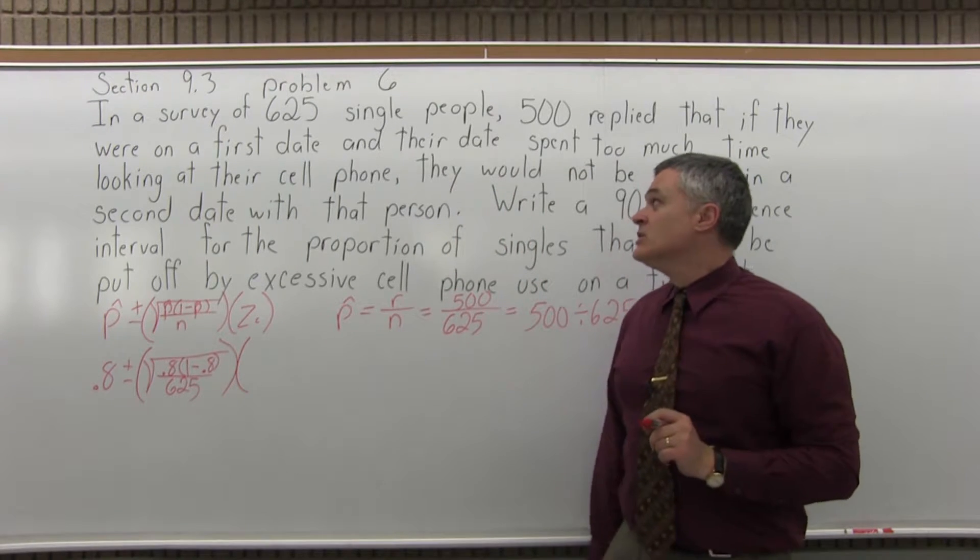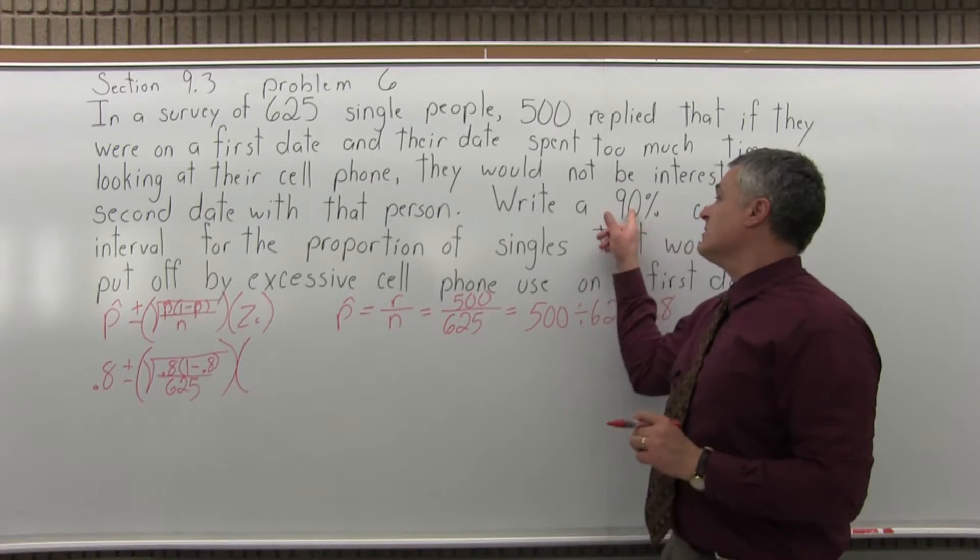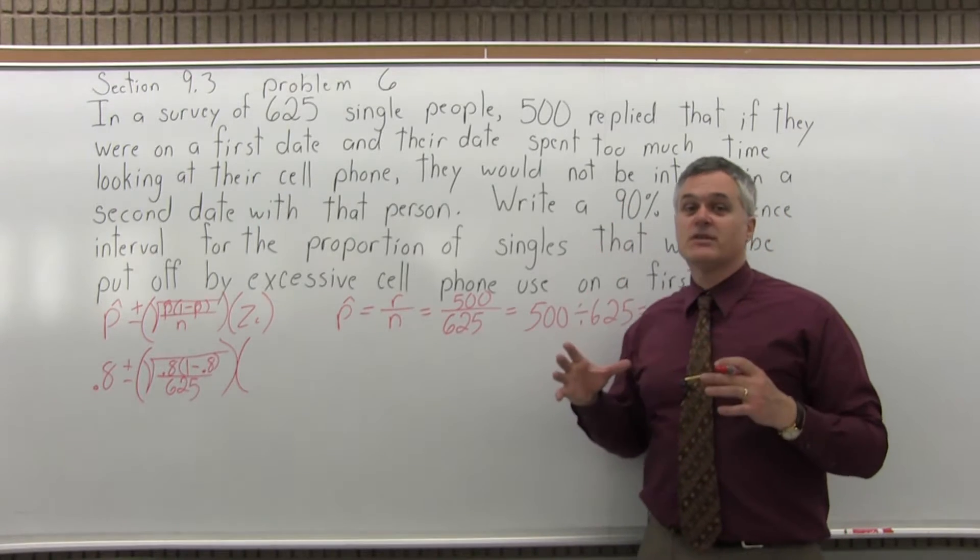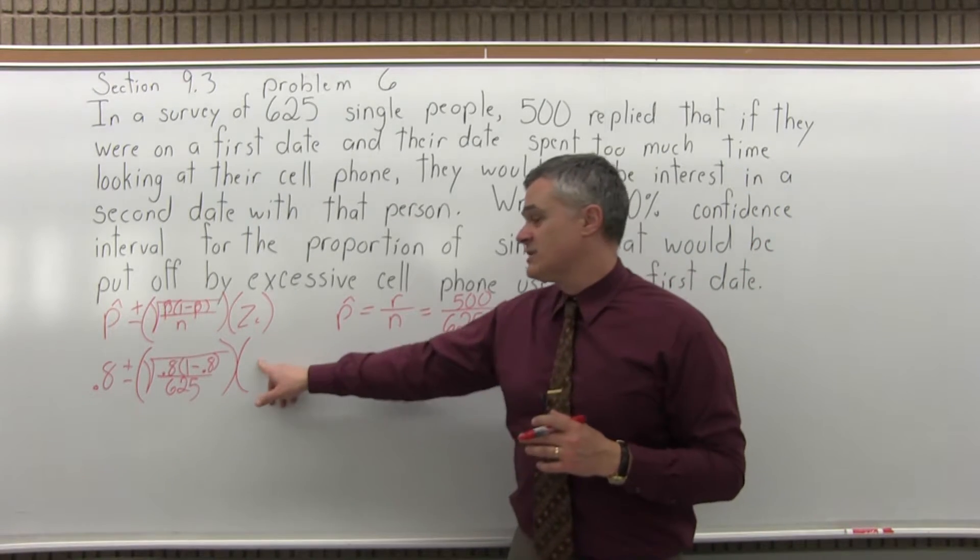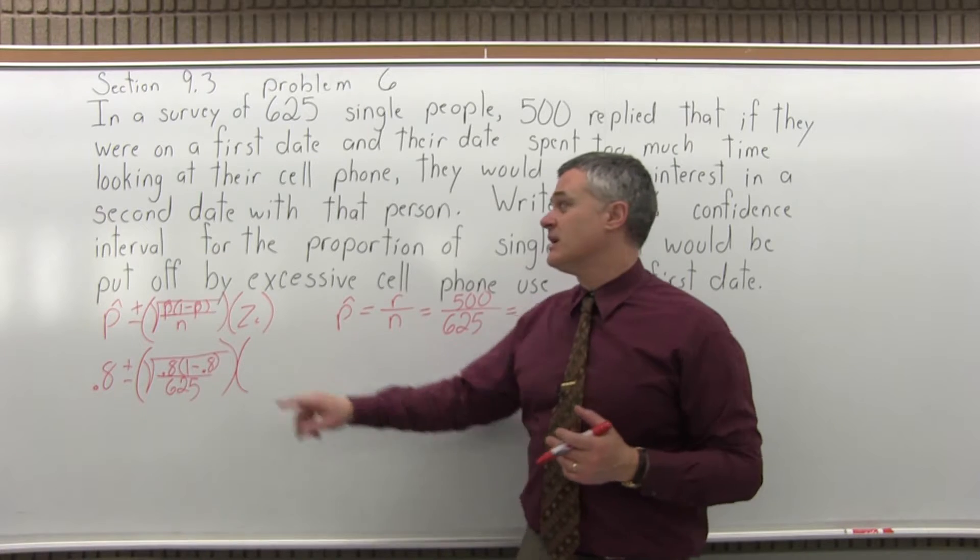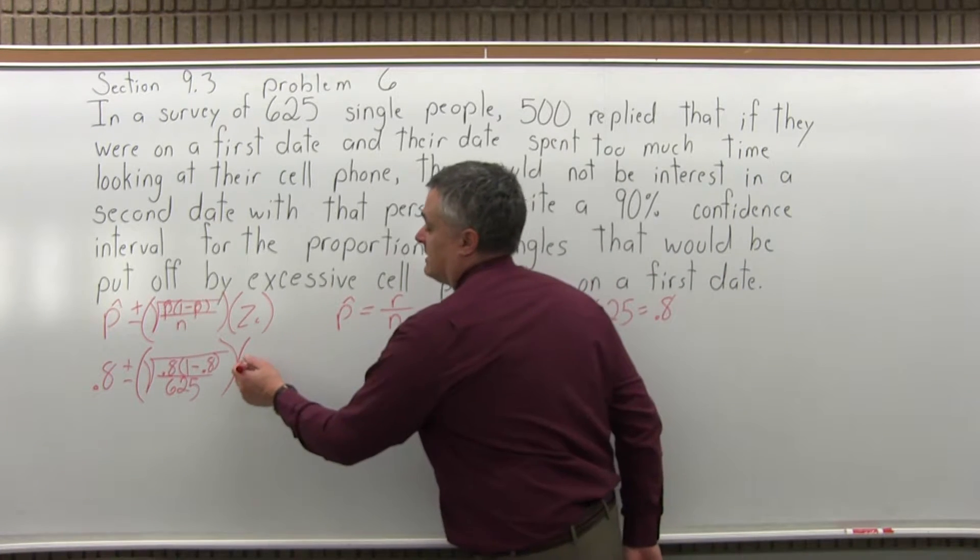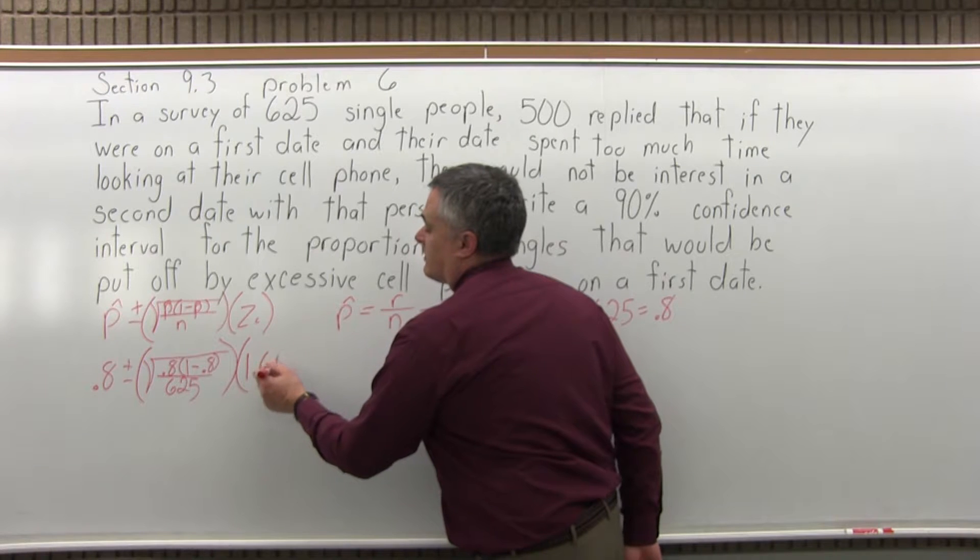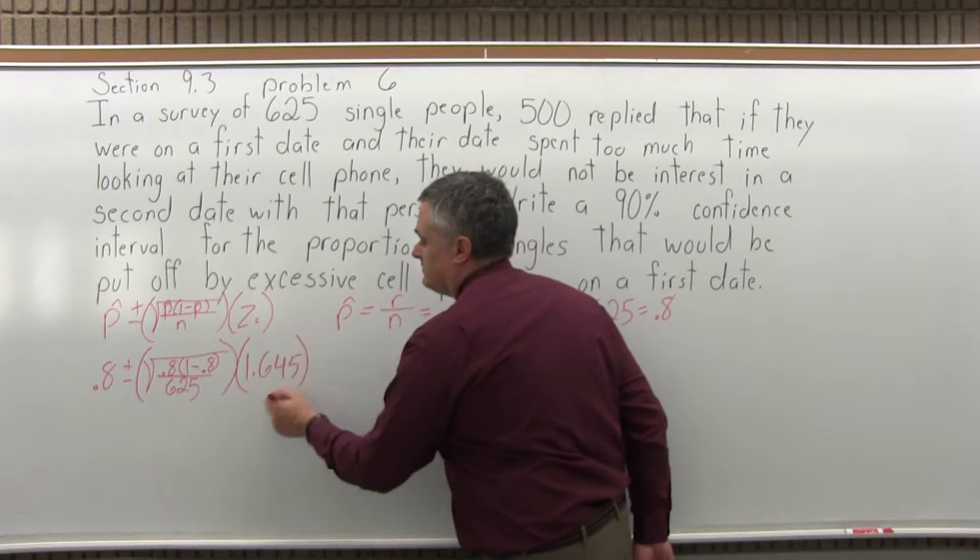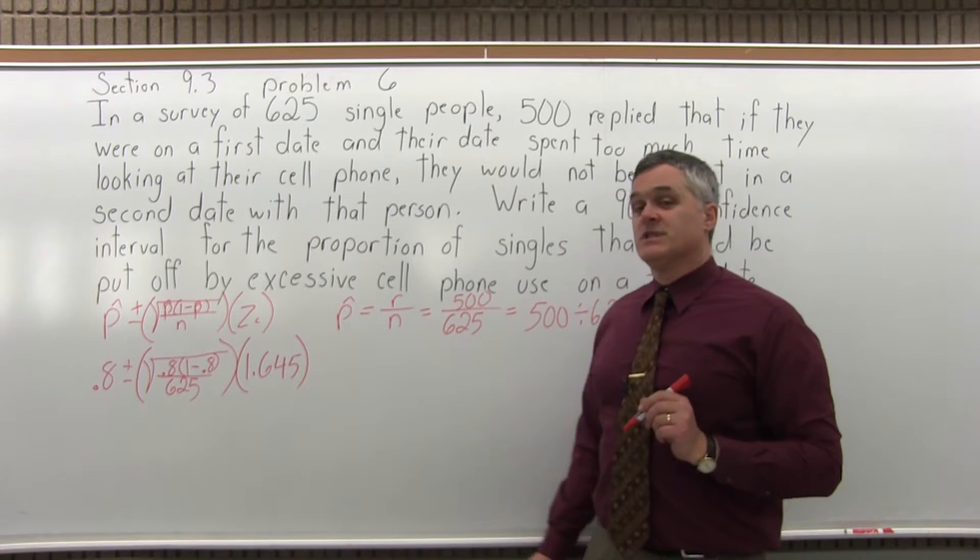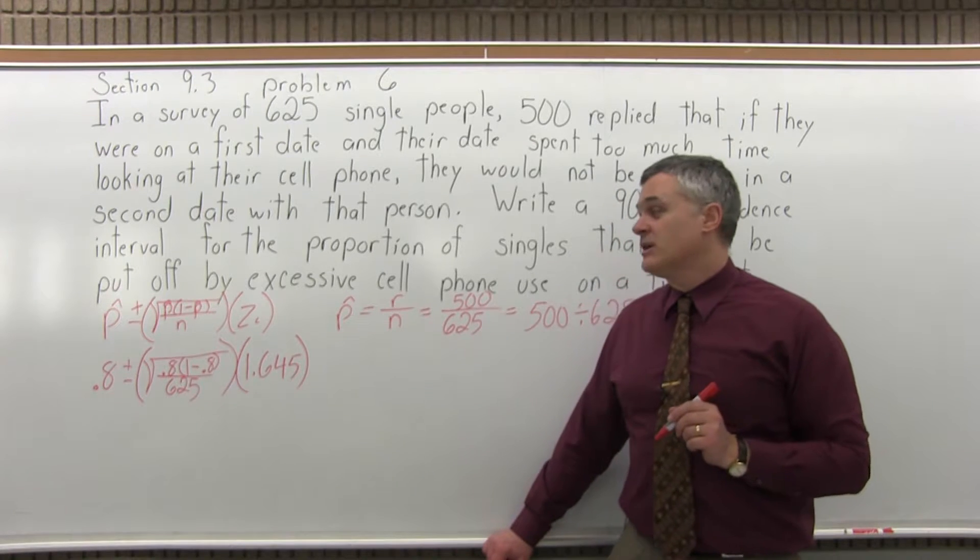And z sub c, the confidence coefficient. So this particular problem asks for a 90% level of confidence. And there is a chart that tells you the different confidence coefficients for the various levels of confidence. For 90%, the number for z sub c is 1.645. So that fills in the formula. Now we can go ahead and start doing the math.